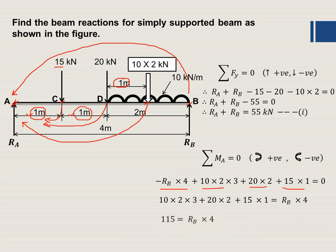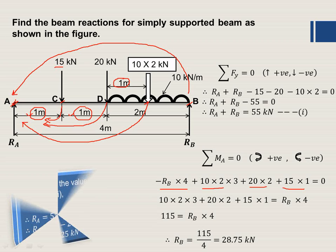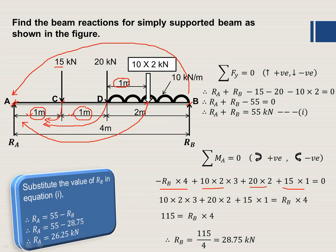Transferring the negative term to the other side, the summation gives 115 = RB into 4, so RB = 115 divided by 4 = 28.75 kN. Substituting into the first equation, RA = 55 minus 28.75 = 26.25 kN. In this way, we can find the beam reactions for a simply supported beam carrying point loads as well as a uniformly distributed load.